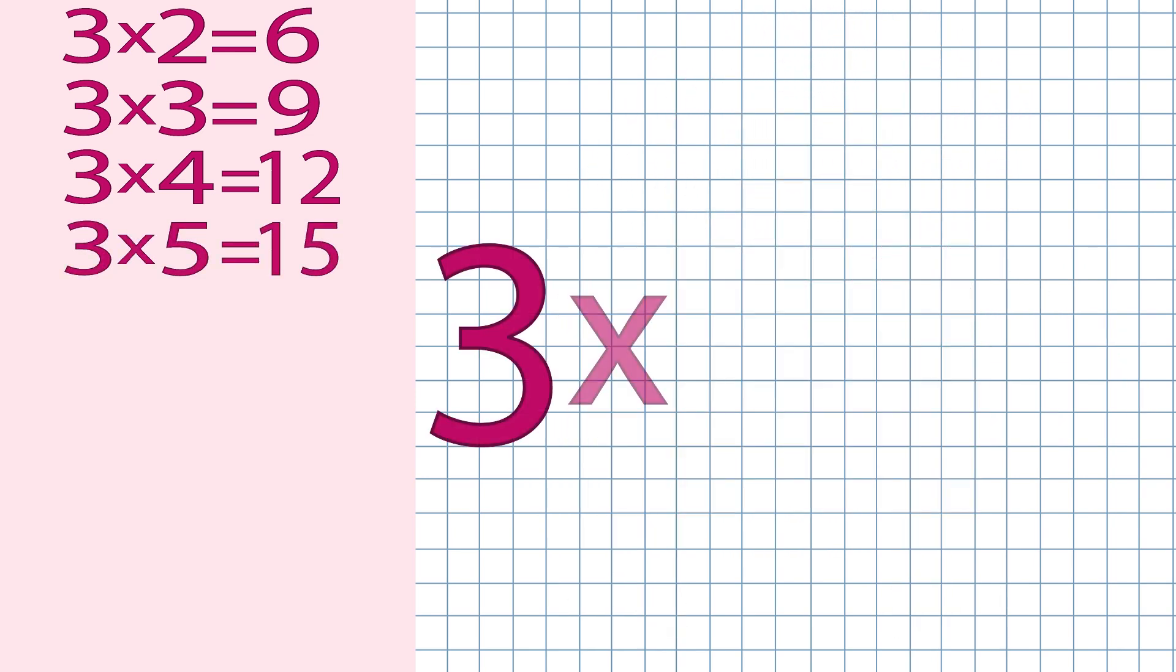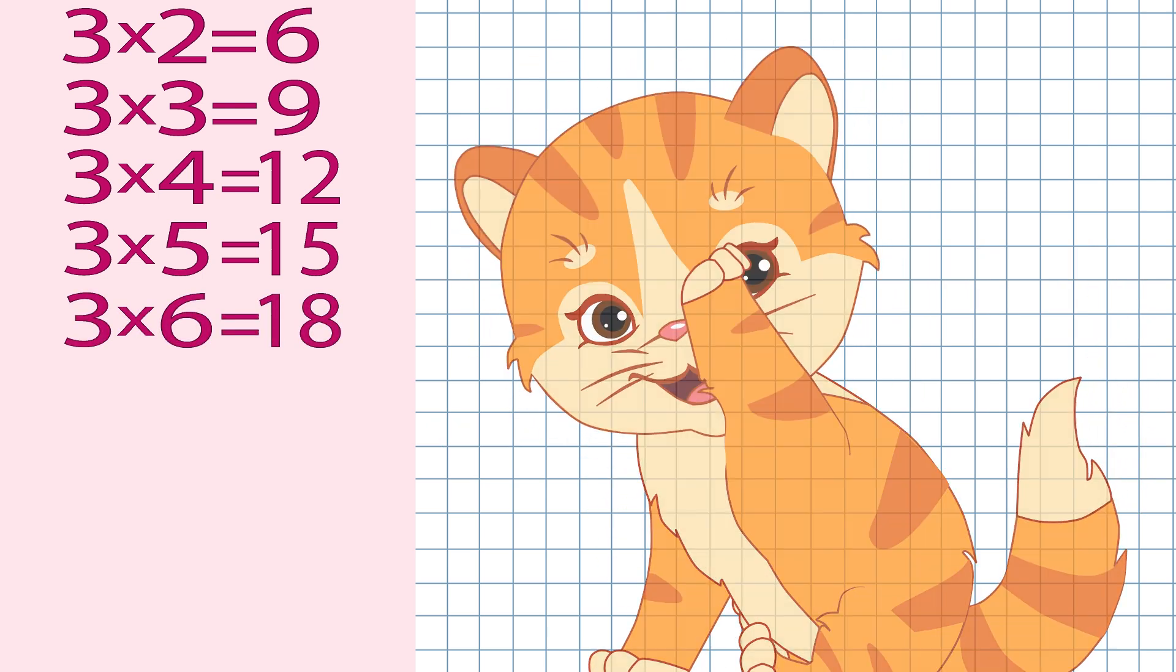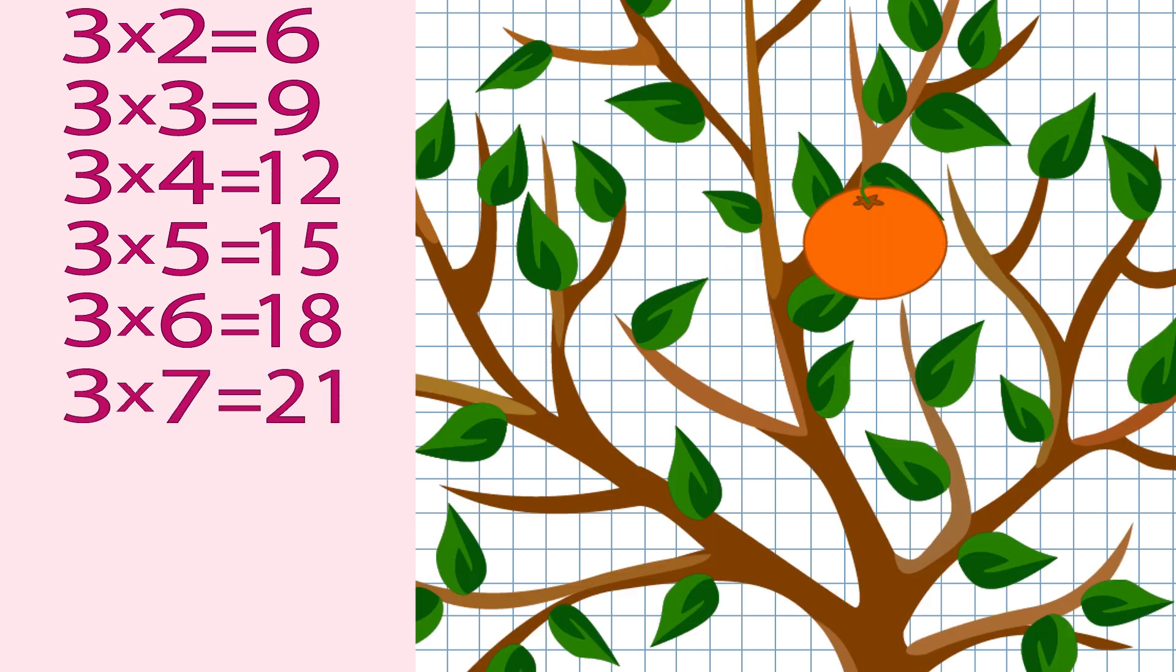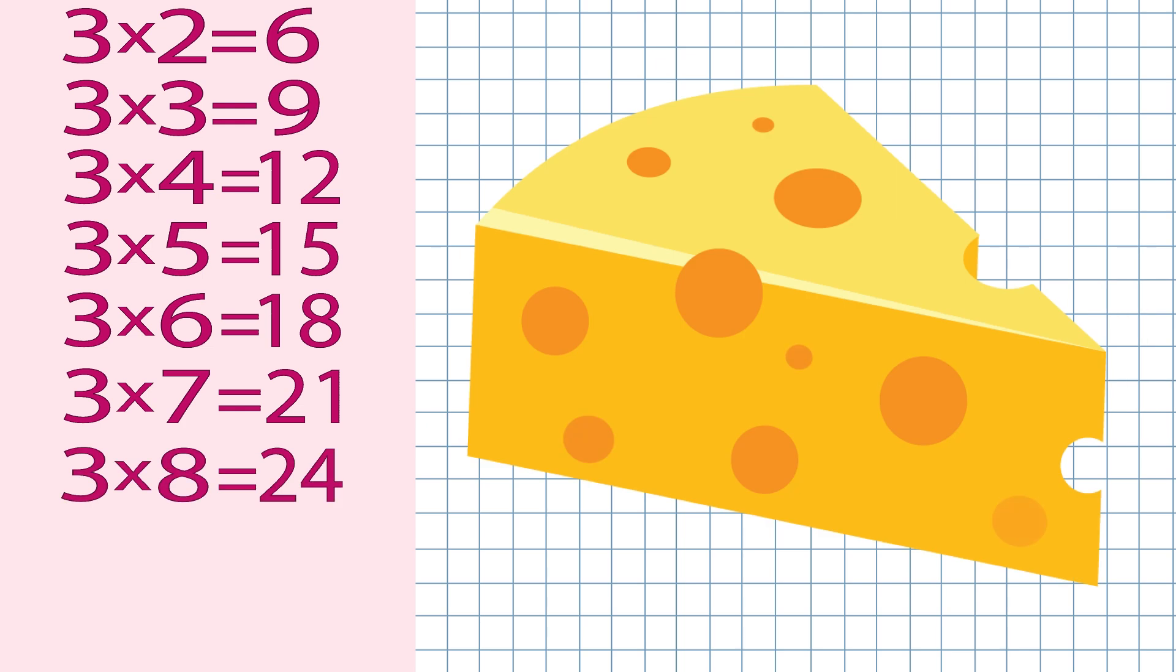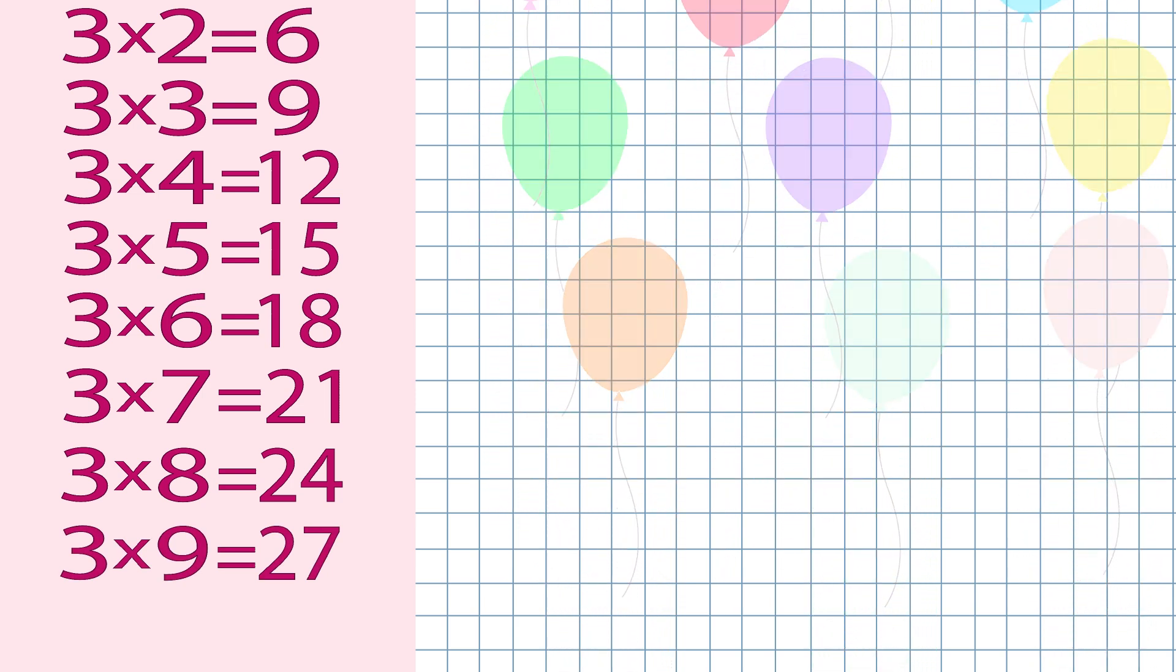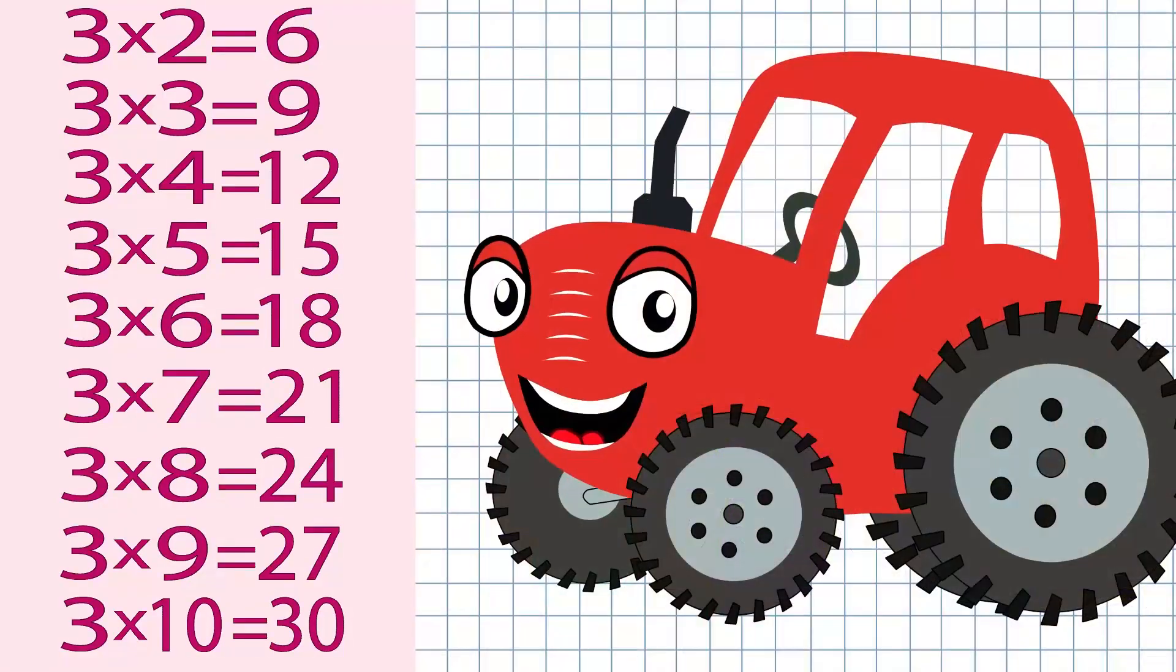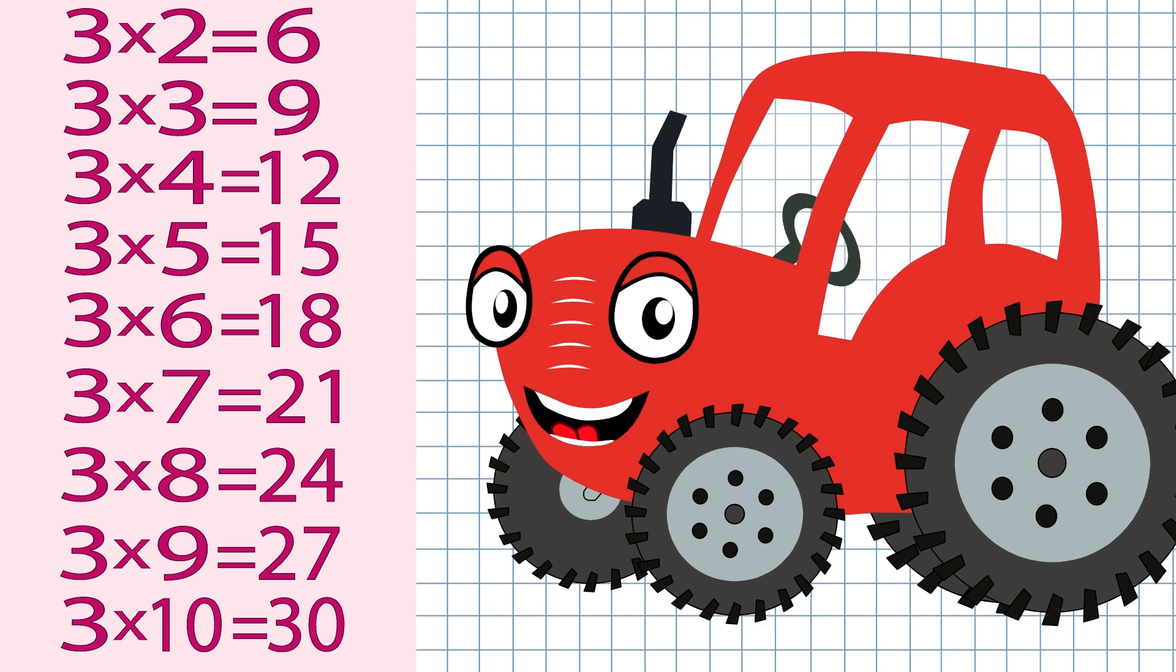Three times six makes eighteen. Cats from themselves within. Three times seven is twenty-one. A mandarin has no grow. Three times eight is twenty-four. In the cheese's many holes. Three times nine is twenty-seven. With balloons we will present. Three times ten makes thirty. And the window seat maidens. They will own Sunday morning. Learn three times table.